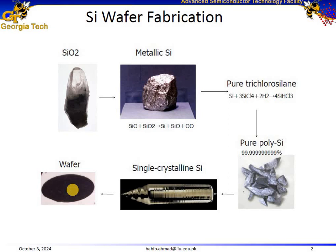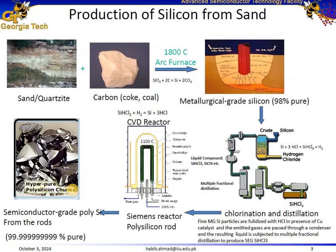This series of transformations turns raw silicon dioxide into ultra-pure silicon wafers, essential for electronics.